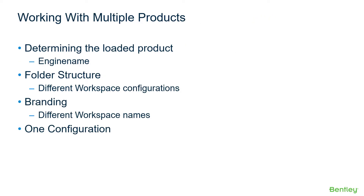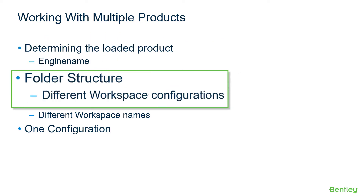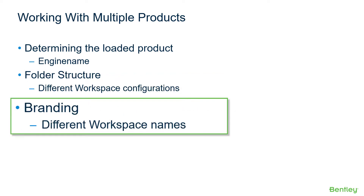When working with multiple products, you need to be able to separate the portions of the workspaces in some manner. The traditional manner has been to utilize the engine name variable to do this. However, each of the products has different workspace configurations and folder structure. There are also issues where if you use the out-of-the-box workspaces, each of the workspaces has different names. So you need to consider the branding of the workspace and the workset on the files as well.